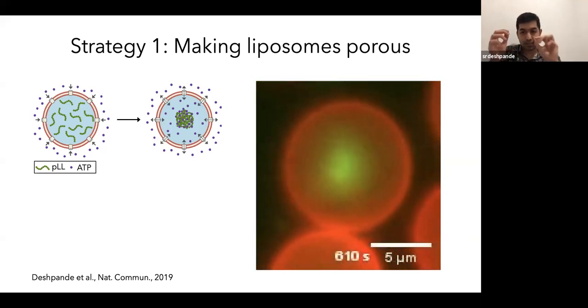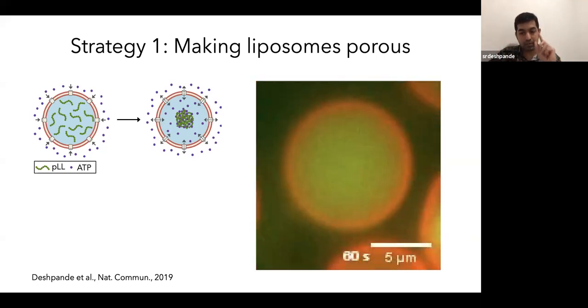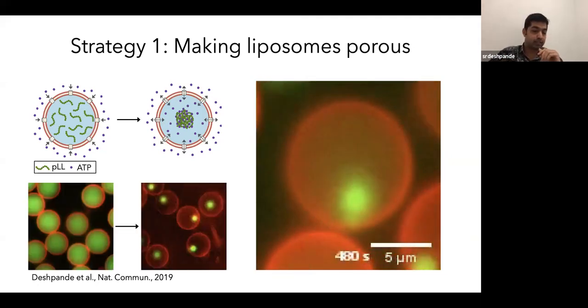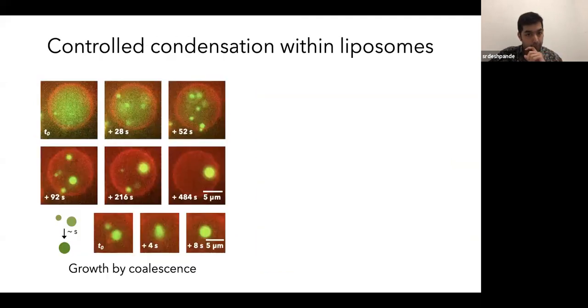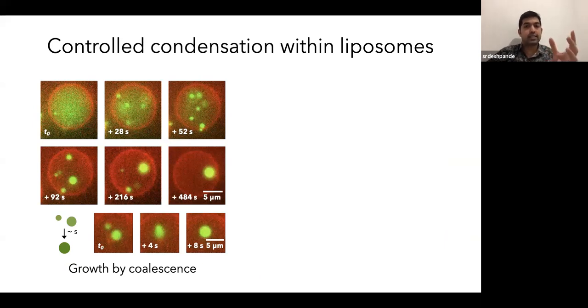And ultimately, all these small condensates come together to form one single condensate, which is freely diffusing into the liposome. So this is the before-after pictures. Before, you have a homogenous interior. Afterwards, each liposome has one single condensate. So we can really form condensates in a controlled manner. And you see the intermediate time frames for this video.